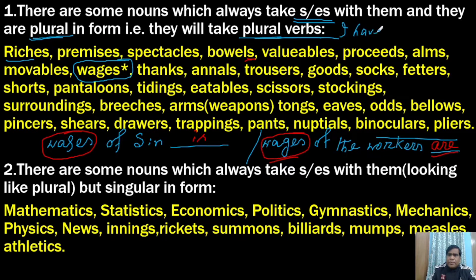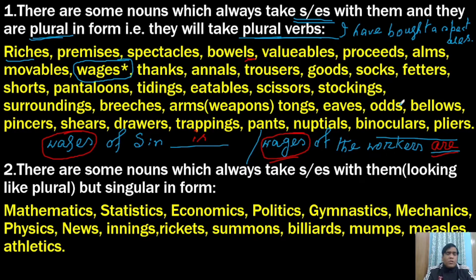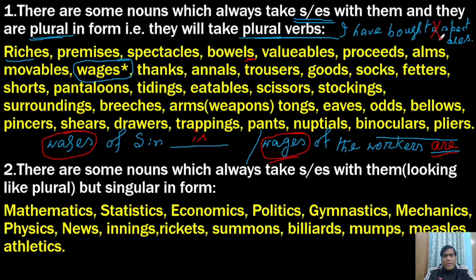For example, if you say 'I have bought a spectacle,' that is wrong. If you say 'I have bought spectacles' with an S, that is also incorrect. You have to say 'I have bought spectacles' — that is correct. You cannot say 'a spectacles' as that is wrong.